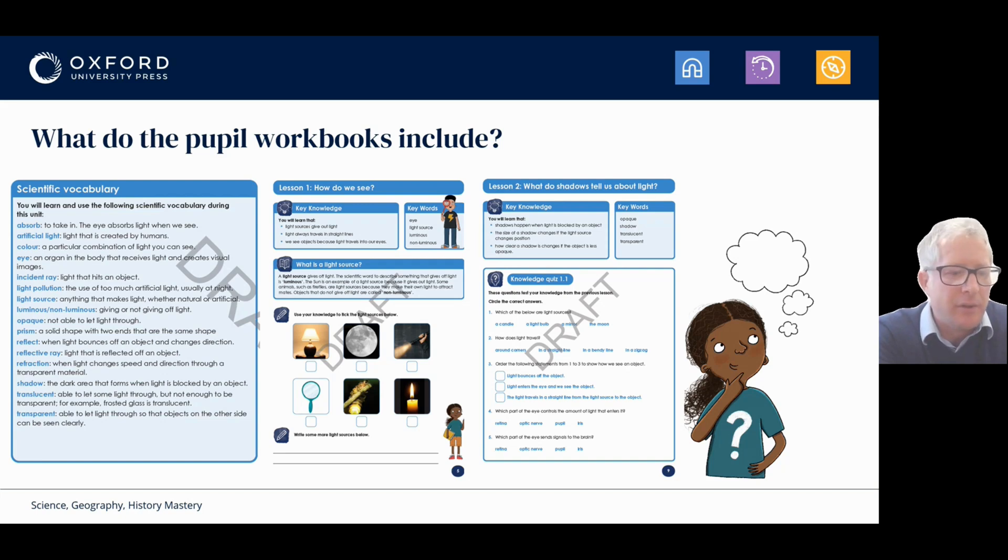The lesson I'm going to take you through is on light. And here you'll see that there's some text explaining what a light source is. This is then followed by pupil activities and on the third example page on the right. You'll see an example of a knowledge quiz. This helps to test what the children have already learned and these appear in every lesson apart from the first lesson in the unit because the knowledge quizzes test knowledge from the previous lesson.